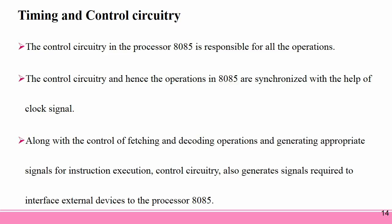Timing and Control Unit: The Timing and Control Unit is a section of the processor used to generate timing and control signals necessary for the execution of instructions. It is used to control data flow between the processor and peripherals, and to provide status, control, and timing signals required for the operation of memory and I/O devices. It controls the entire operations of the microprocessor and peripherals connected to it.